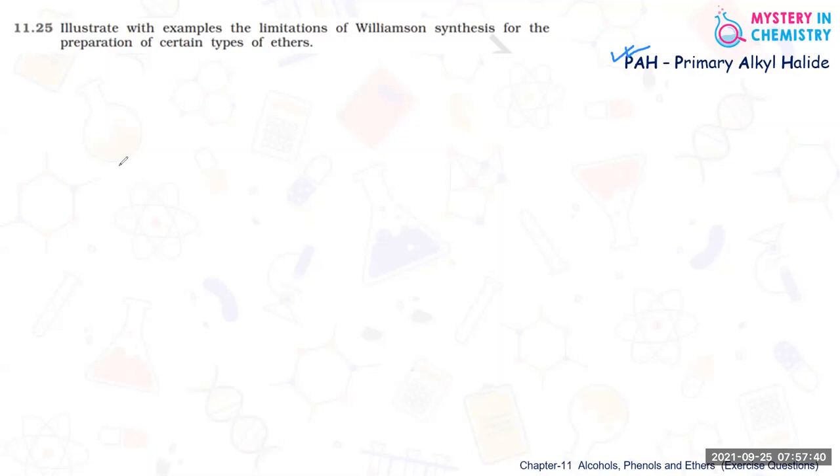This we can consider as a limitation of Williamson synthesis. If we have to prepare ether starting from a tertiary alkyl halide like CH3-C with two CH3 groups and Cl, suppose this tertiary alkyl halide is given. And by this if we want to prepare some ether by Williamson synthesis, then this reaction is not possible.